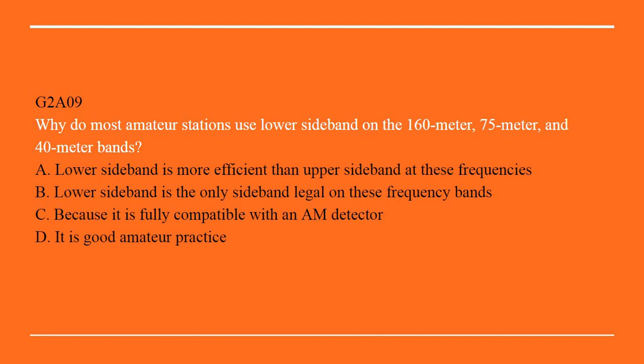G2A09: Why do most amateur stations use the lower sideband on 160 meter, 75 meter, and 40 meter bands? A. Lower sideband is more efficient than upper sideband at these frequencies. B. Lower sideband is the only sideband legal on these frequency bands. C. Because it is fully compatible with an AM detector. Or D. It is good amateur practice. Correct answer D: It is good amateur practice.